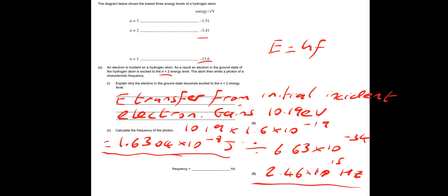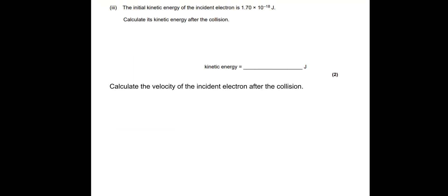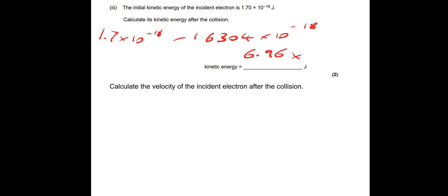We've just got one more question and then we're finished. The initial kinetic energy of the incident electron is 1.7 × 10⁻¹⁸ J. Calculate the kinetic energy after the collision. We take the initial kinetic energy and subtract the energy deposited into the atom: 1.7 × 10⁻¹⁸ − 1.6304 × 10⁻¹⁸ = 6.96 × 10⁻²⁰ J remaining kinetic energy after the collision.